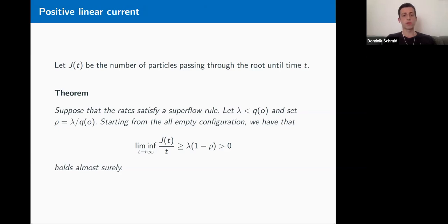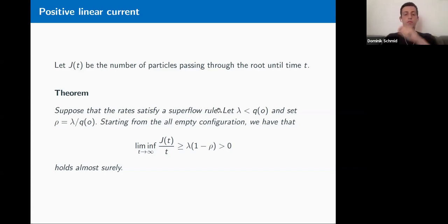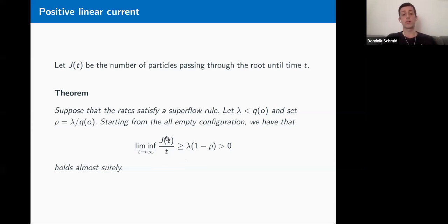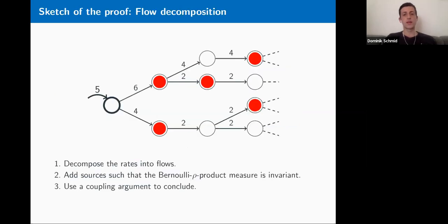Let's come to the first main theorem, about positive linear currents. Let J_t be the number of particles passing through the root until time t. Assume the rates satisfy a super flow rule — whatever flows out is at least what flows in. Then for lambda strictly less than the strength of the flow, setting rho equal to lambda divided by the strength of the flow, and starting from the all-empty initial configuration, we have almost surely a positive linear current: the limit of J_t/t is strictly positive and at least lambda times (1 minus rho).